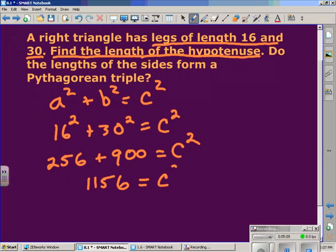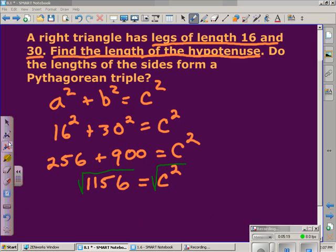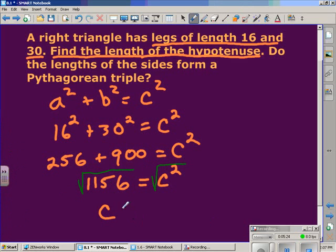To find the value of c, we do the opposite of squaring a number which is taking the square root. We take the square root of c squared and the square root of 1,156. And that will tell us that c is equal to 34. So the length of the hypotenuse of a triangle with legs of 16 and 30 is 34.